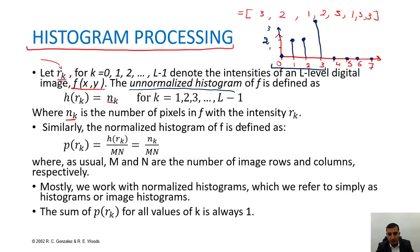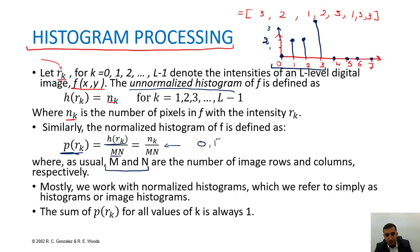Similarly, the normalized histogram is defined as P_R(r_k), where P is the probability of r_k, equal to H(r_k) divided by M×N, where M and N are the number of pixels per rows and columns respectively. A normalized value means your histogram values will now be between 0 and 1.